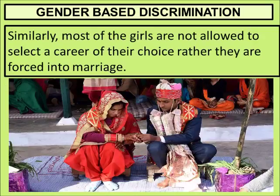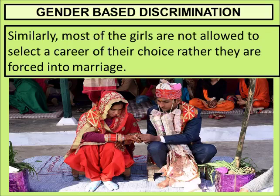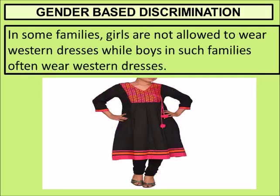Most girls are not allowed to select a career of their choice and are forced into marriage. We tell boys to go look for a job, but we tell girls to get married. We should tell girls to look for jobs too. If we are forcing girls into marriage, we should also equally force boys. Telling boys to find jobs while telling girls to get married is discrimination. In some families, girls are not allowed to wear western dresses while boys in such families often wear western dresses — that is also discrimination.